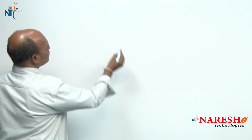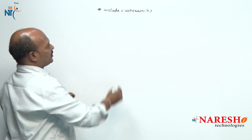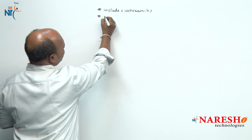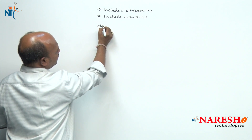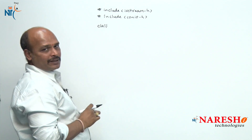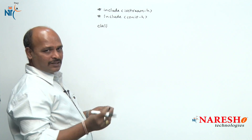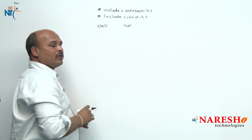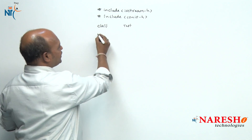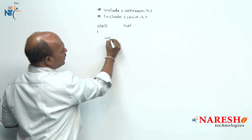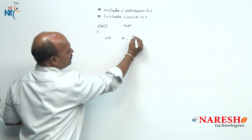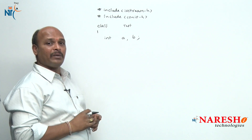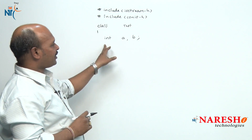Now watch this — I am going to work through the example. First, as usual, the common header files: iostream.h and conio.h. Next, I am going to start a class. This time I want a normal class, for example class test. The class test has two data members: int a, b.